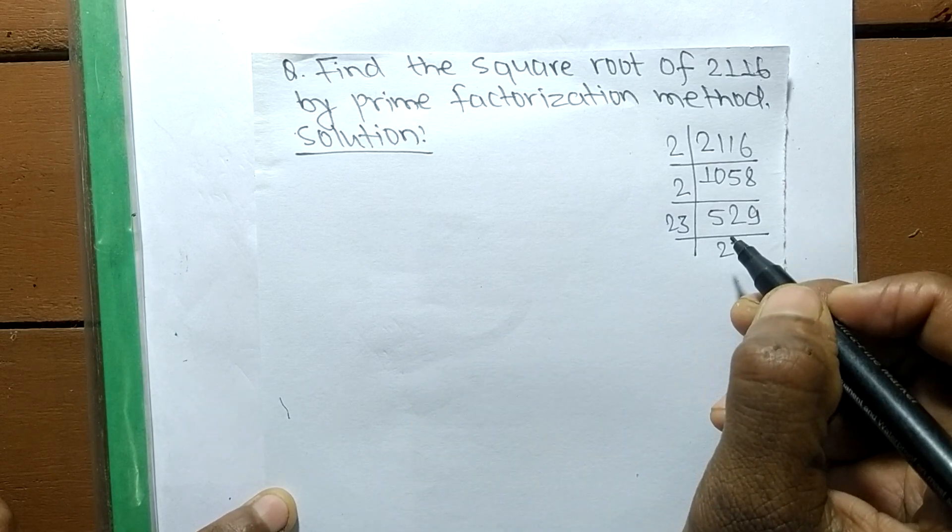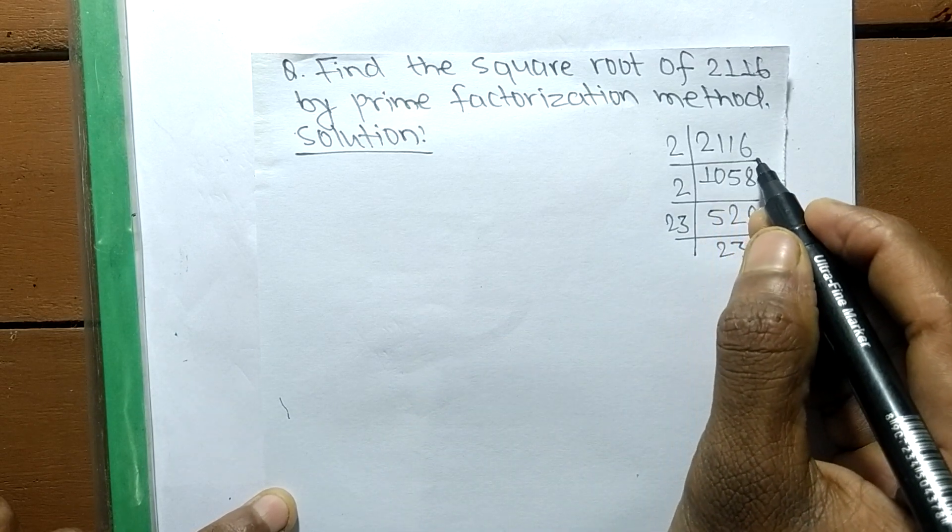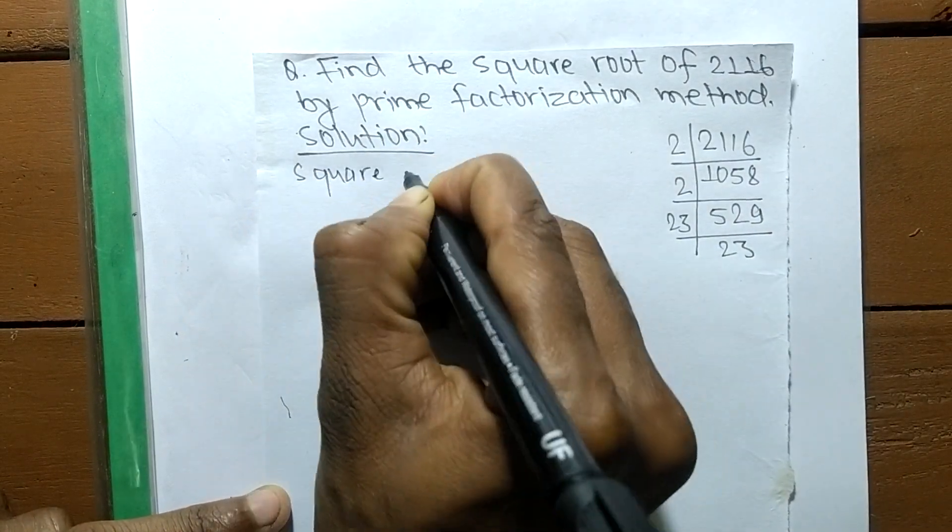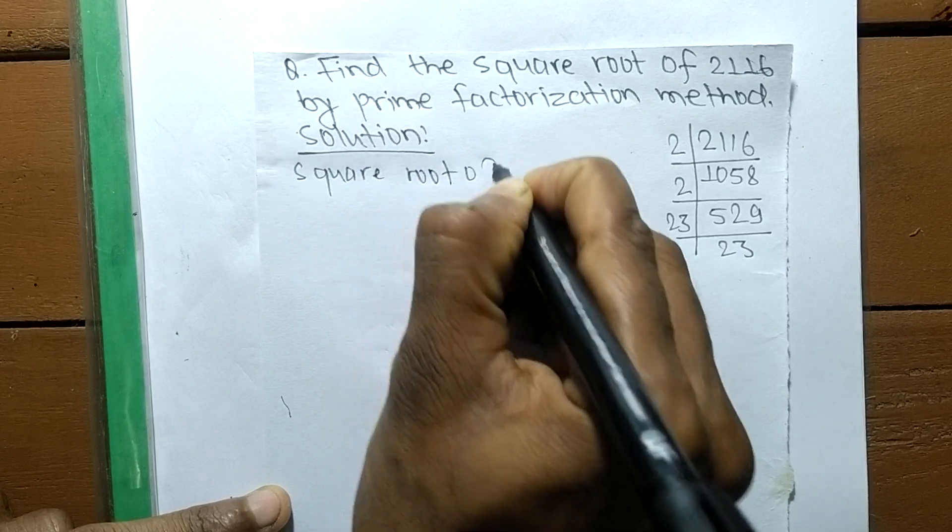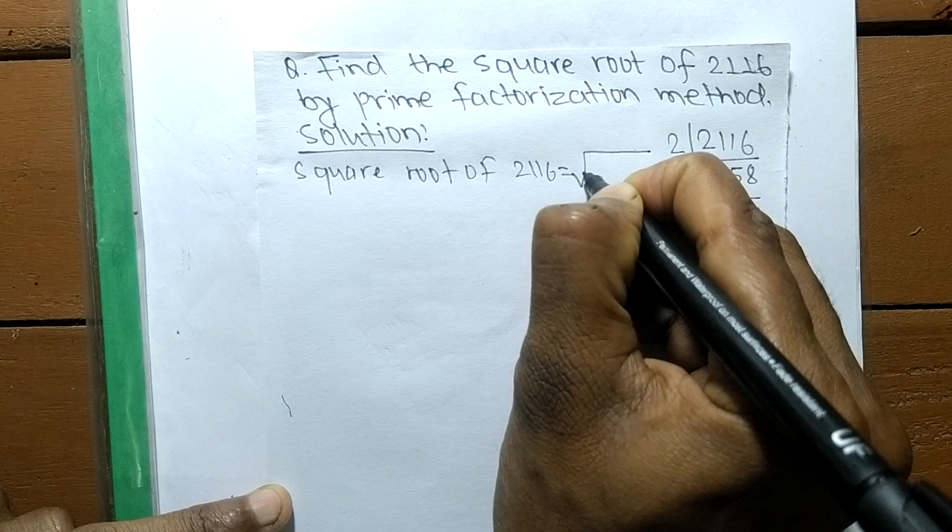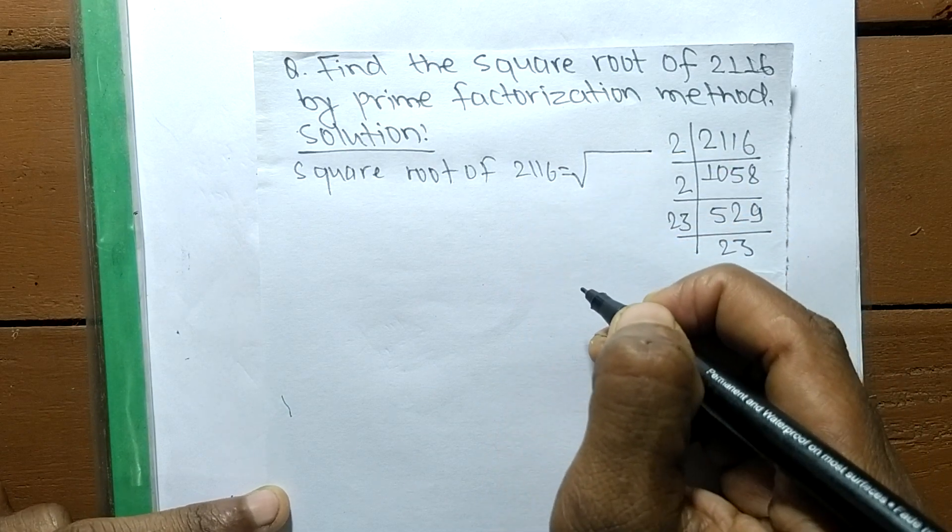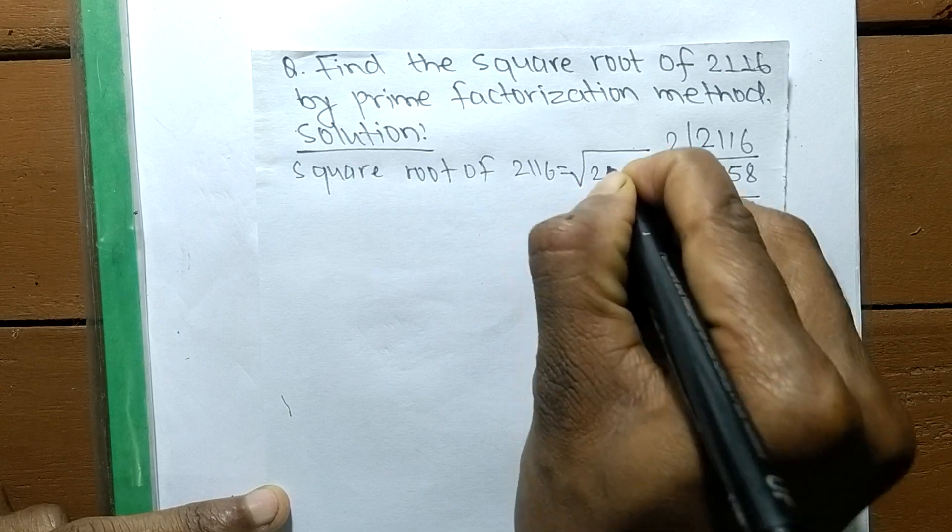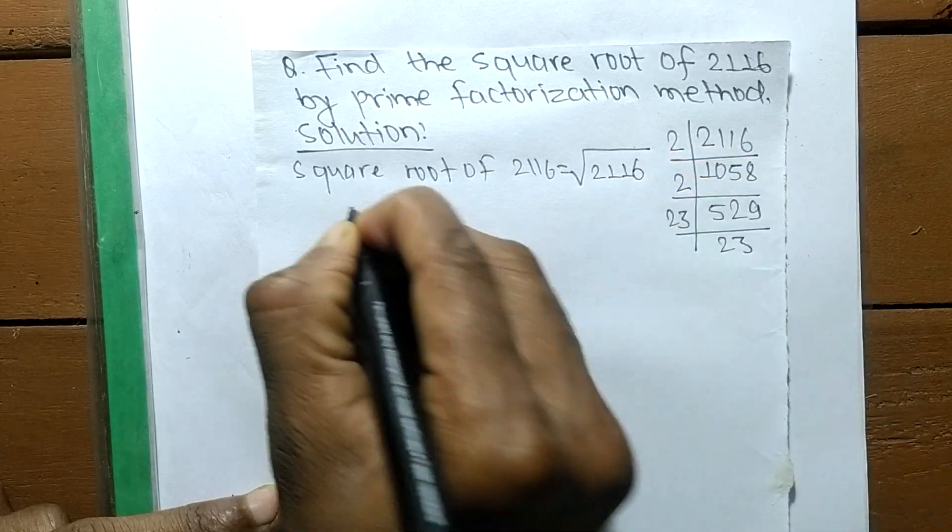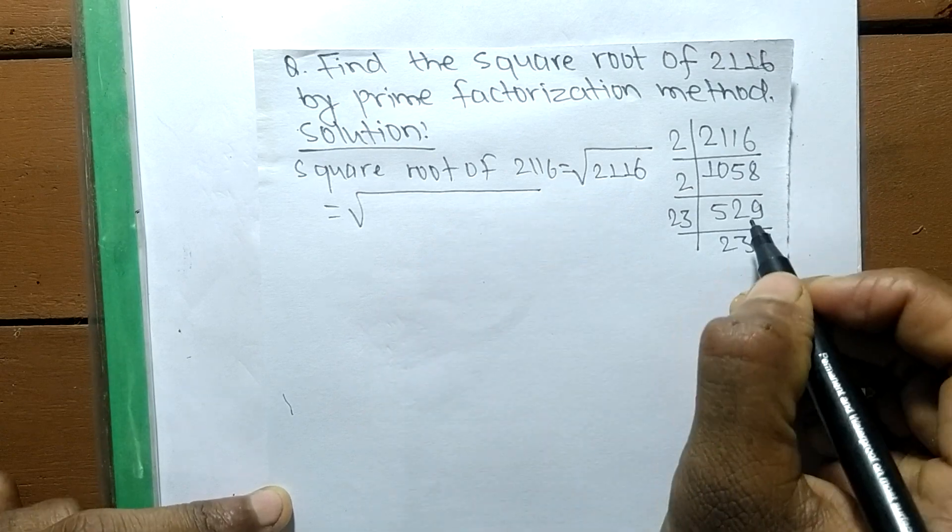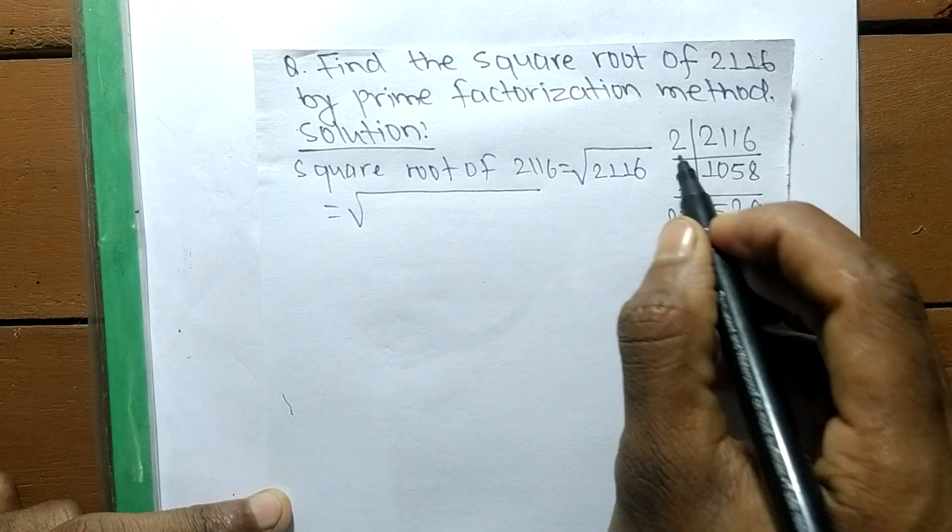Now we are finding the square root. This sign is the sign of a square root, and we are finding the square root of 2116. Now we have to write down the prime factors of 2116.